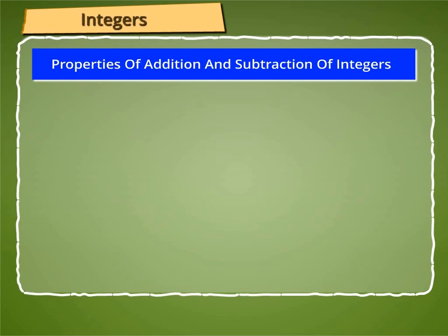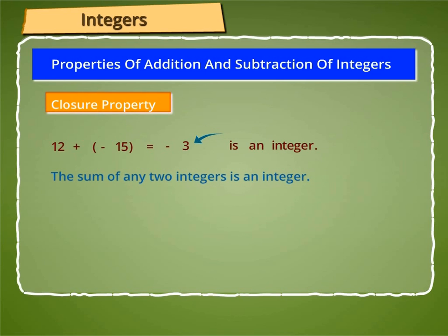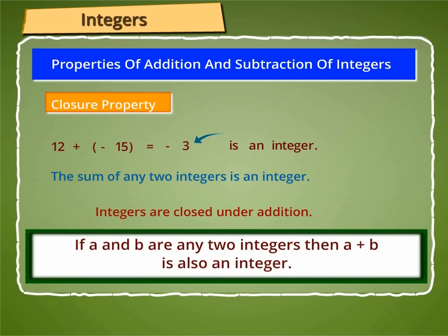Properties of Addition and Subtraction of Integers. Closure Property: As we know, 12 plus minus 15 is equal to minus 3, and minus 3 is an integer. Thus, the sum of any two integers is an integer. We can say that integers are closed under addition. Hence, if A and B are any two integers, then A plus B is also an integer.